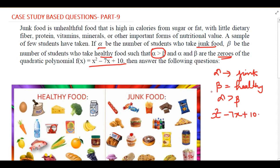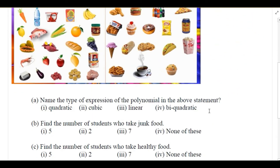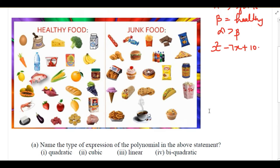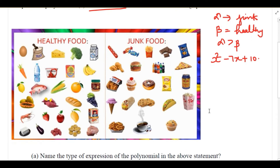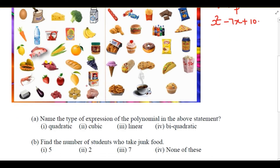The first question asks us to name the type of expression of the polynomial in the above statement. The expression is x² - 7x + 10. It is a quadratic polynomial because the highest degree is 2.